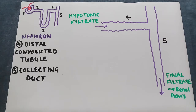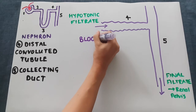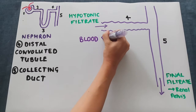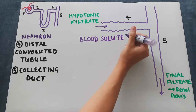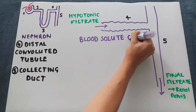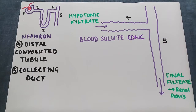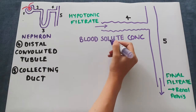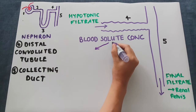The main function of the distal convoluted tubule and the collecting duct is to regulate blood solute concentration. These two sections help to troubleshoot this blood solute concentration — is it too high, or is it too low, and what can these two sections do to help with that?